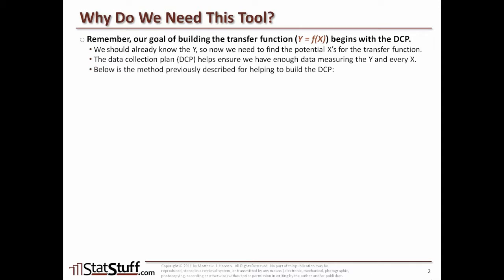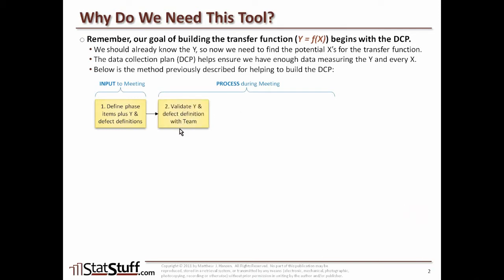So what we're going to review again is the overall method for how we might build the DCP. We start by making sure we have the defined phase items as inputs to our meeting with the team, which would include the Y and the defect definitions — all those things we should have defined before the meeting even begins. Then for the meeting itself, the process begins with validating the Y and the defect definition with the team to make sure they agree with it.